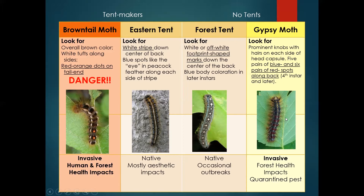Then you have gypsy moth. It tends to occur a little bit later in the summer than browntail — typically after late June. We often get a lot of calls saying "I have gypsy moth." I got calls from Western Maine in Fryeburg saying they had browntail out there, and at first I was a little alarmed. But it was a little bit late for browntail caterpillars, and sure enough through some photos, it was a gypsy moth outbreak — just something to be aware of.